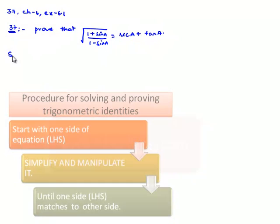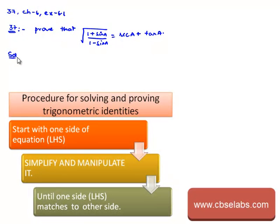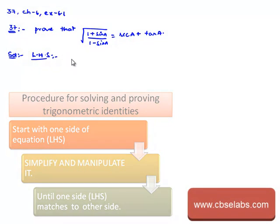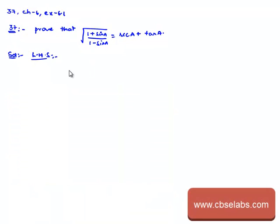Now, in order to prove that, let us first consider the left hand side and we shall prove that it is equal to the right hand side. That is, the left hand side is square root of (1 plus sin A) divided by (1 minus sin A).